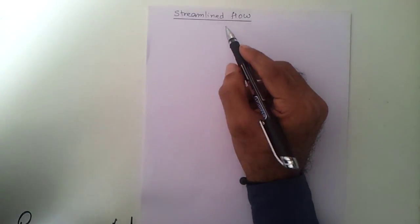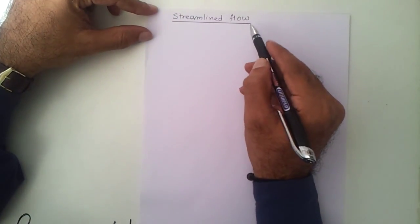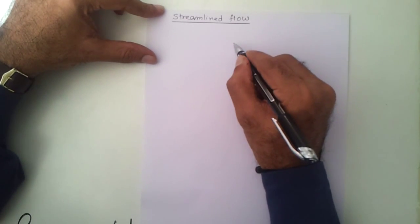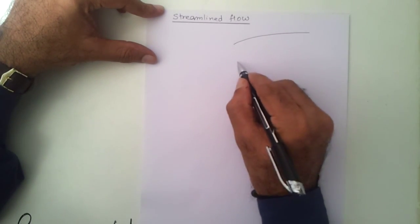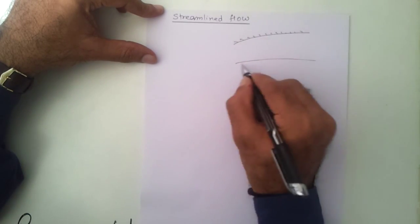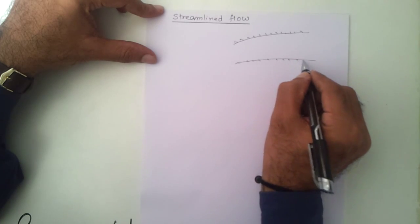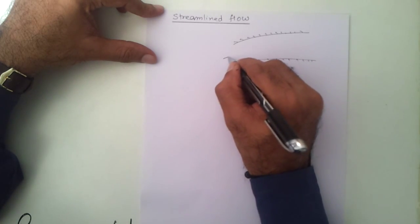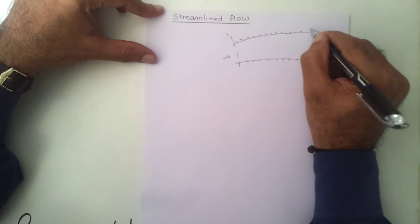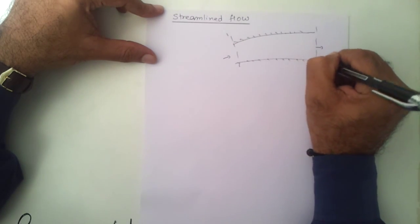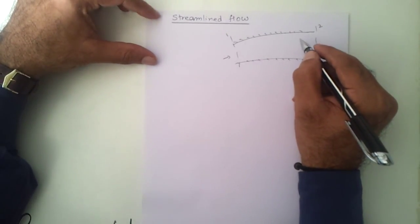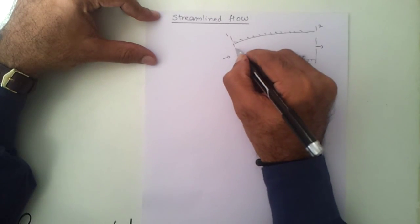In this video we are trying to understand what is the meaning of streamline flow. Let us say we have a pipe in which a liquid is flowing. The liquid enters over here and comes out from here. Let us say this is cross section 1 and this is cross section 2 of the liquid.